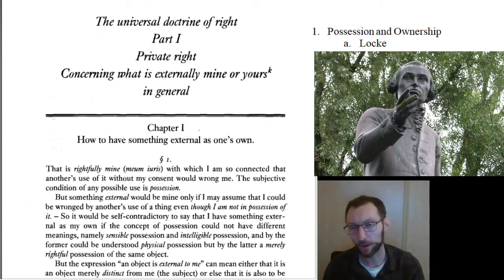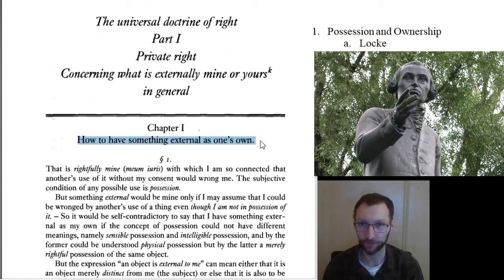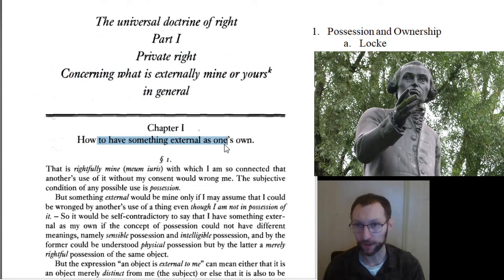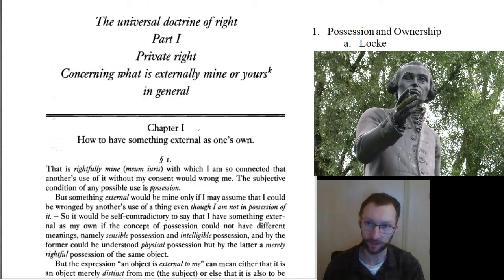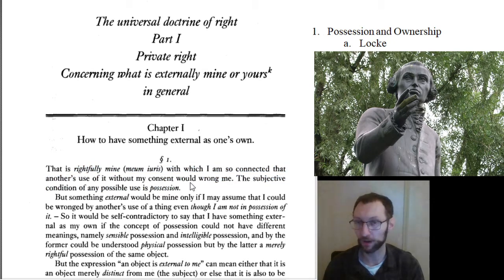This is the lecture for Part One, Chapter One: private right concerning what is externally mine or yours in general, and specifically how to have something external as one's own. When you read through this section, we're talking about property. Kant is very interested in possession and how to come to possess the external world, or parts of it — how something can be rightfully yours or rightfully mine.